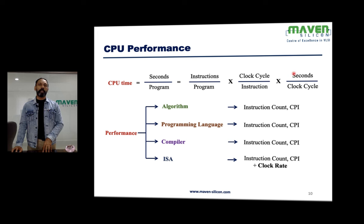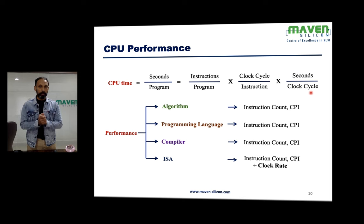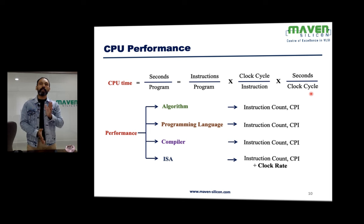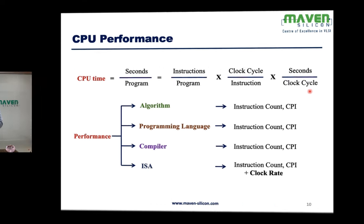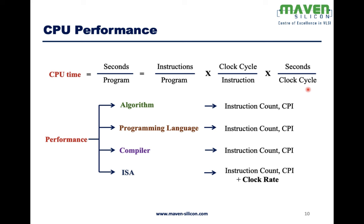On the hardware side, we can look at how to reduce the clock period (seconds per clock cycle) to improve frequency. Improving frequency allows us to execute more instructions per second. This is achievable through hardware design, including implementing pipelining — such as a multi-stage pipeline processor.